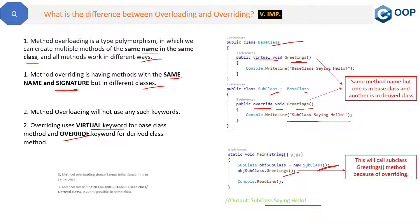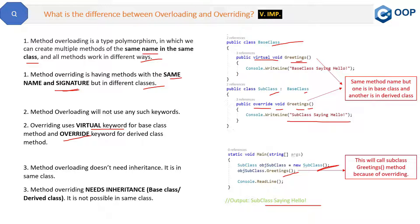The last difference is that overloading does not need inheritance, because two methods with the same name and different signatures are present in the same class. But in the case of overriding, you need inheritance — it is not possible in the same class. Here you can see we have a base class and a subclass as two different classes following inheritance. The requirement for overriding is two different classes: one base class and one derived class. Overloading does not require that.